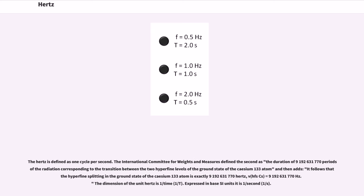The Hertz is defined as one cycle per second. The International Committee for Weights and Measures defines the second as the duration of 9,192,631,770 periods of the radiation corresponding to the transition between the two hyperfine levels of the ground state of the cesium-133 atom. It follows that hyperfine splitting in the ground state of the cesium-133 atom is exactly 9,192,631,770 hertz.